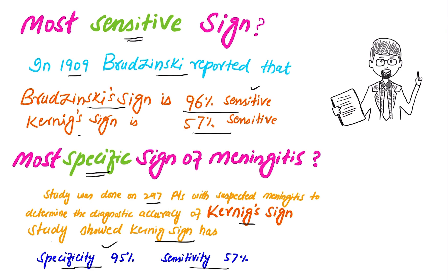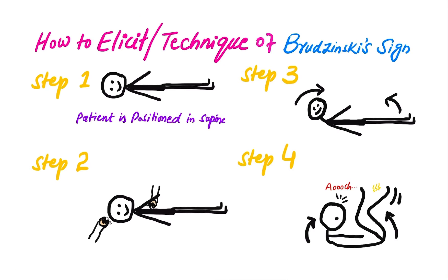How to elicit the Brzezinski sign: In step one, the patient is positioned supine. In step two, gently grasp the patient's head from behind and place the other hand on the patient's chest. In step three, gently flex the patient's neck, bringing the chin to the chest.